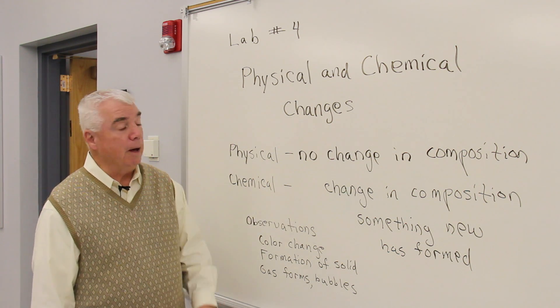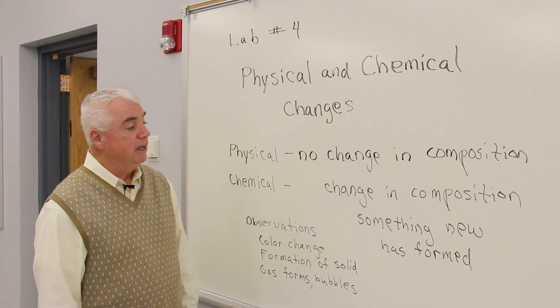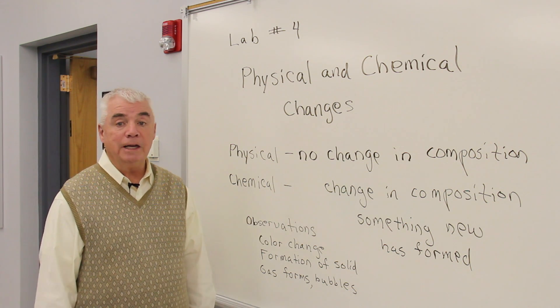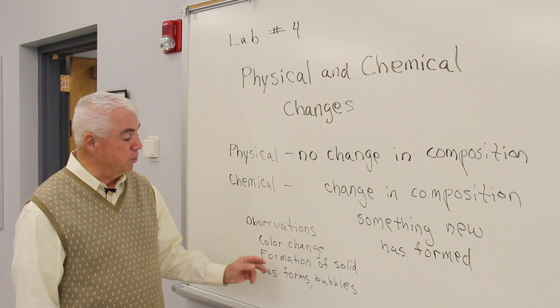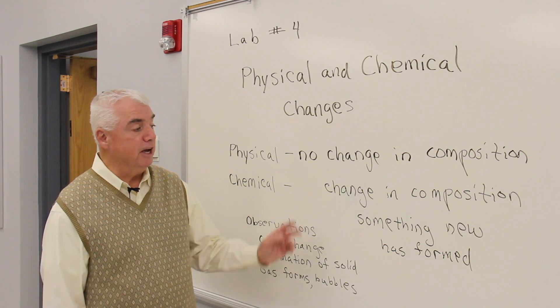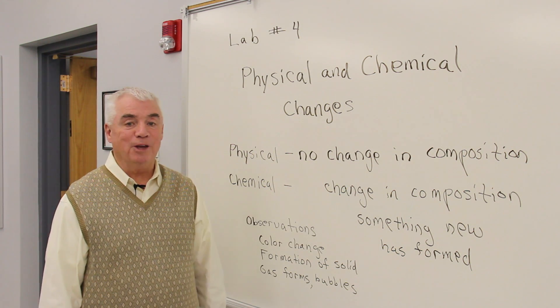In general, the observations that we use in chemistry to decide whether a chemical process has taken place are these three. If there's a color change, oftentimes that indicates that we've got something new.